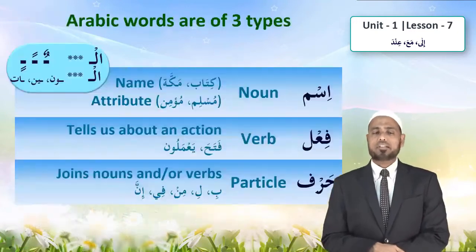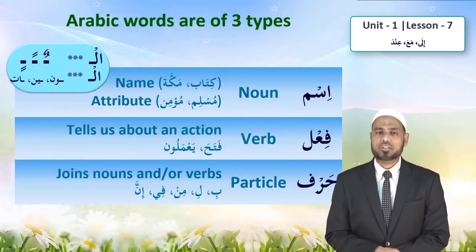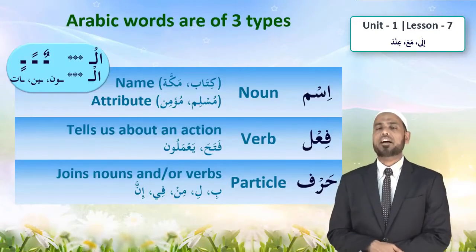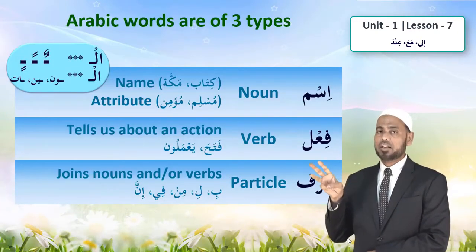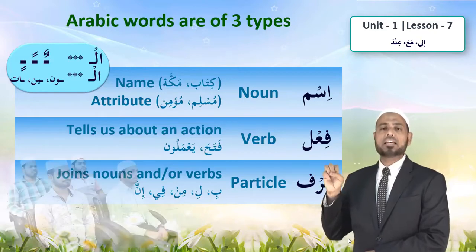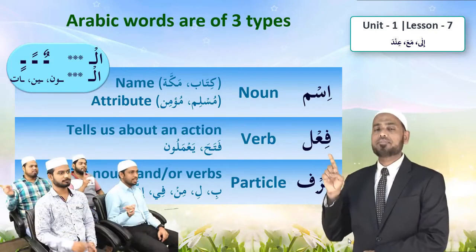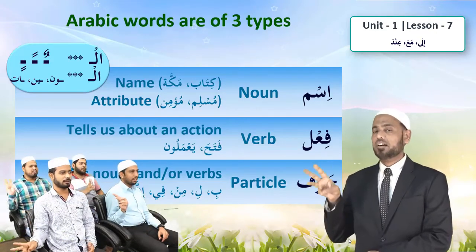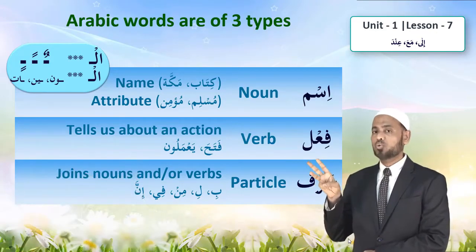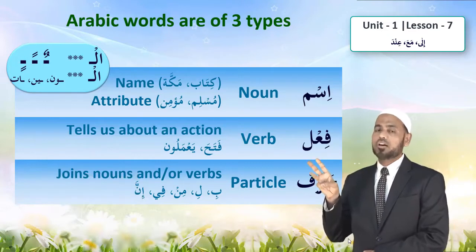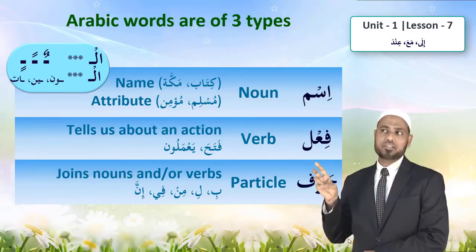We have learned that Arabic words are of three types: Isn, Fa'il, and Harf. And we are learning huruf — the third category.